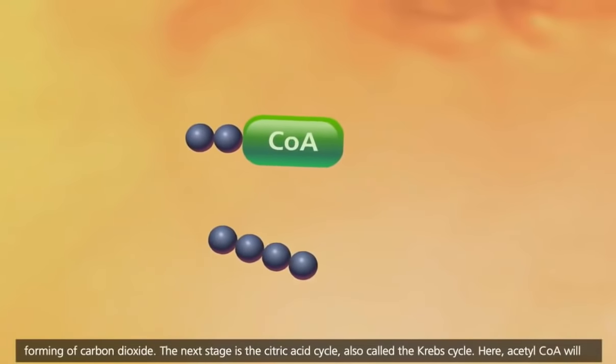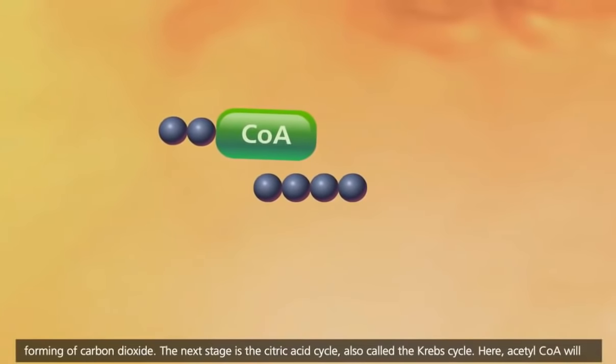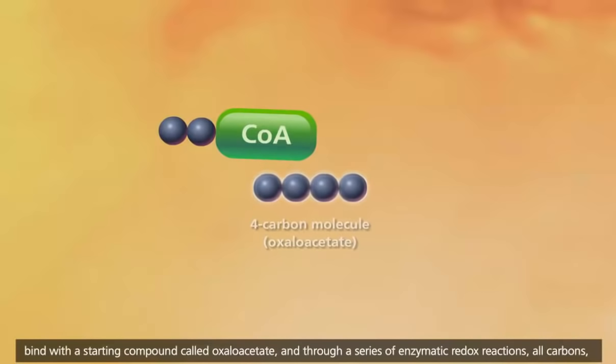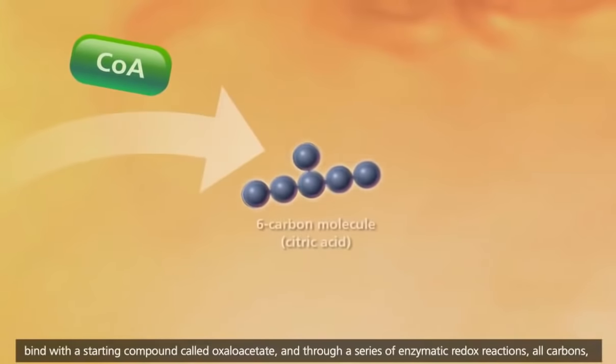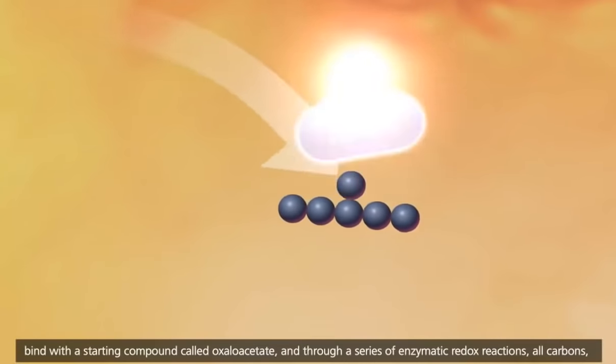The next stage is the citric acid cycle, also called the Krebs cycle. Here, acetyl-CoA will bind with a starting compound called oxaloacetate, and through a series of enzymatic redox reactions, all carbons, hydrogens, and oxygens in pyruvate ultimately end up as carbon dioxide and water.